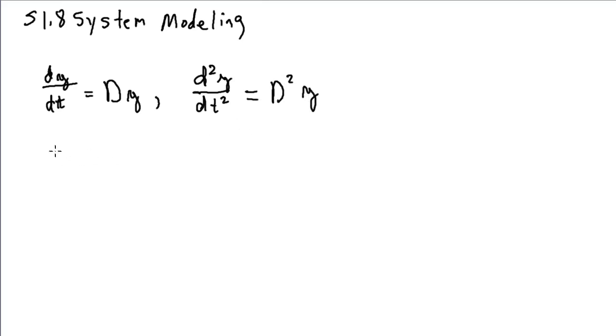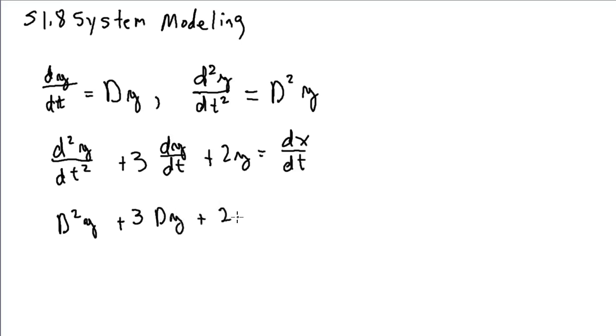This allows us to represent, for example, the second-order differential equation, d squared y dt squared plus 3 times the first derivative of y plus 2y is equal to dx/dt. Using this capital D notation, we would represent this as d squared y plus 3 times dy plus 2y is equal to dx.